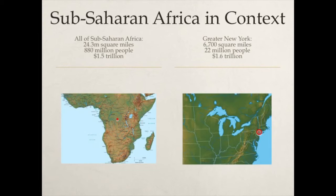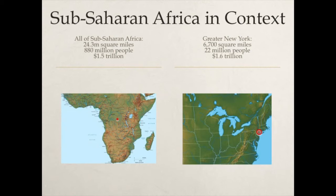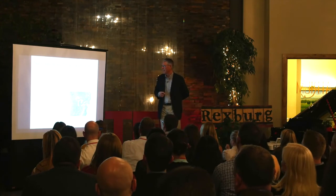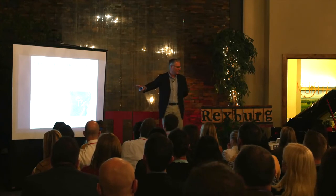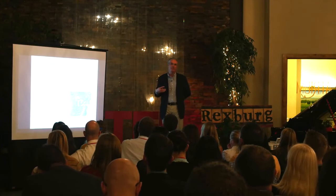Let's put this in context. I have a map of sub-Saharan Africa on the left and a map of the eastern US on the right. The circle represents New York City. All of sub-Saharan Africa's GDP is 1.5 trillion dollars. The greater New York area has 1.6 trillion. Not a fair comparison — the richest part of the world to the poorest — but it does illustrate the wealth gap that is widening.